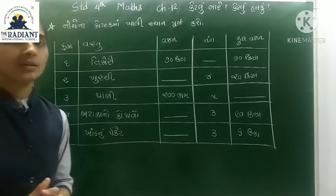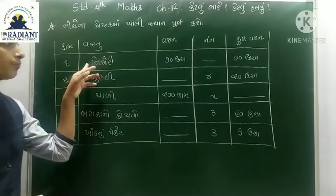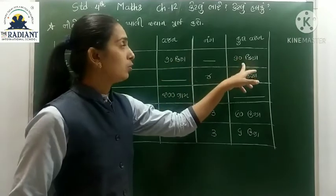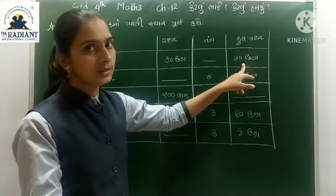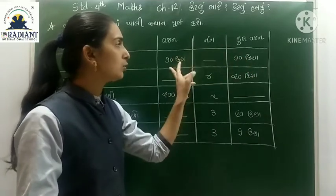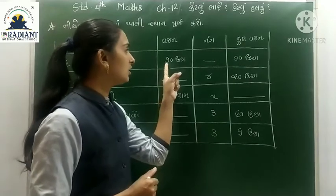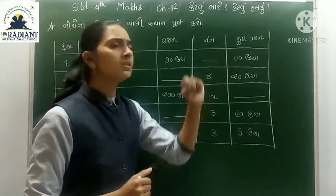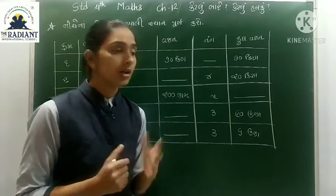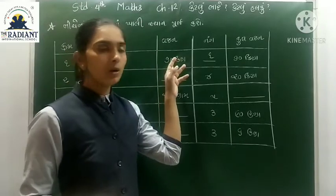ખાલી જગ્યા પૂરવાની છે. એ વસ્તુ નું વજન કેટલું છે? સિત્તેર કિલોગ્રામ છે. અને એ નું કુલ વજન પણ સિત્તેર કિલોગ્રામ છે. તો તિજોરી એક હશે, એ નું વજન સિત્તેર કિલોગ્રામ છે.